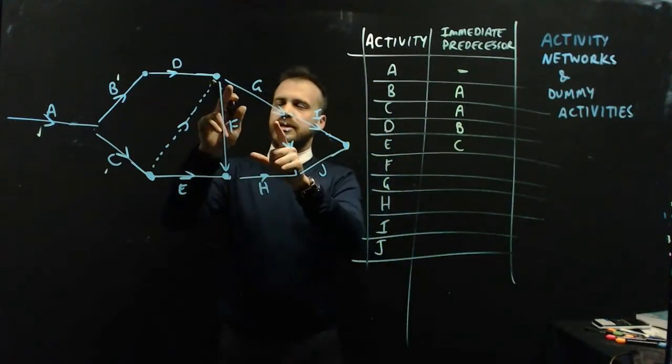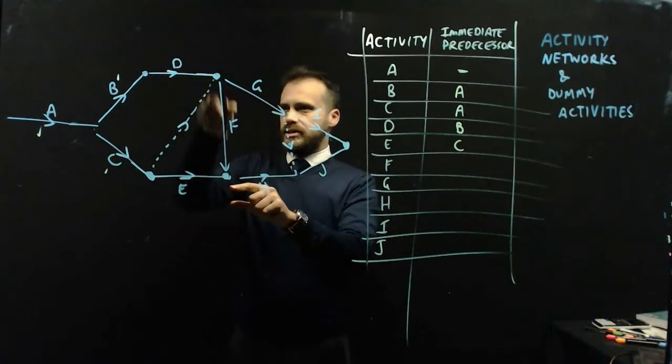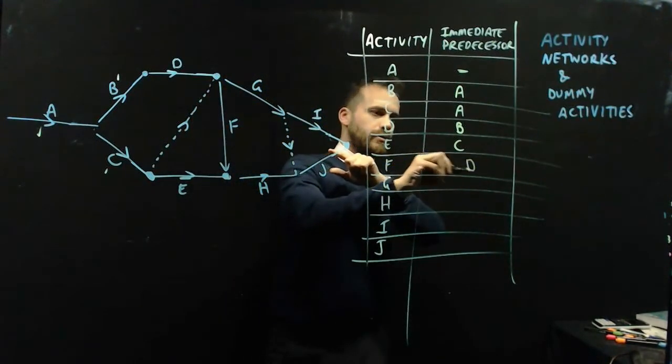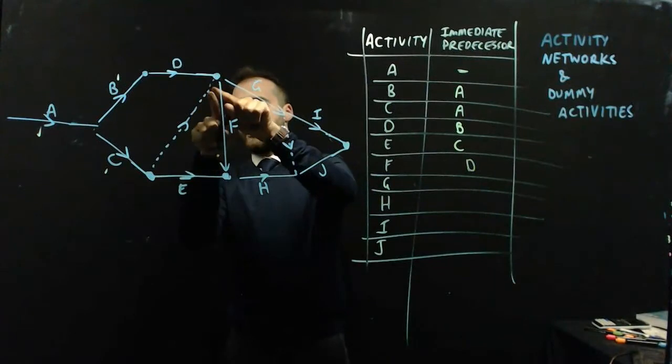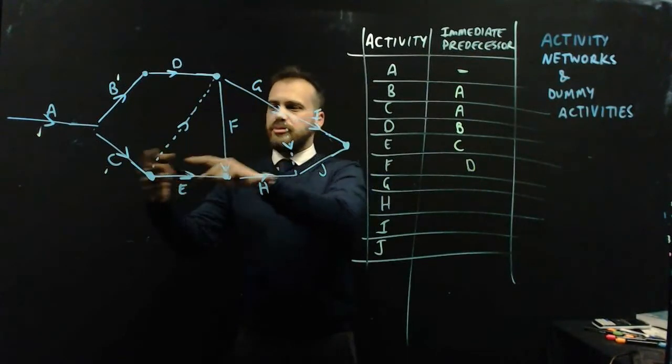Let's look at F. So F is an arrow going downwards. And before F, we have D. But we also have this dummy activity, which is kind of the zero activity, the C plus activity. It's the activity that's leading from C.